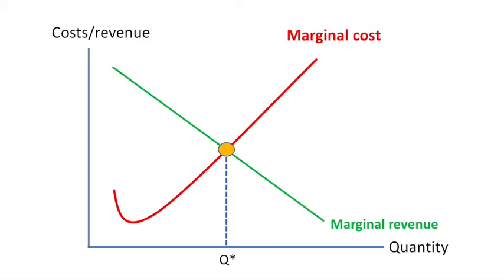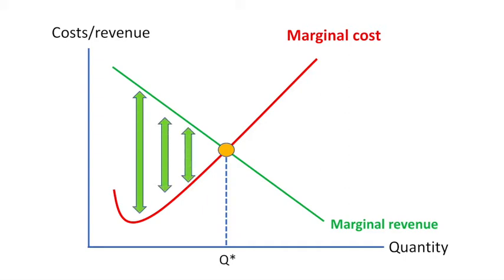The reason for this is that each prior unit is contributing to overall profit as marginal revenue is greater than marginal cost. The firm will continue to produce until no further profit can be achieved from production. This occurs where marginal revenue equals marginal cost.